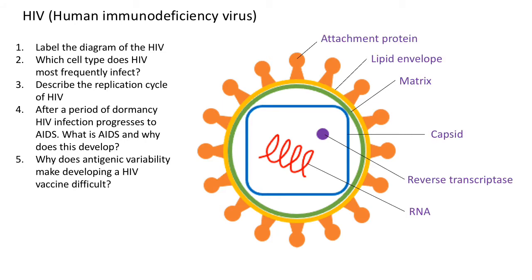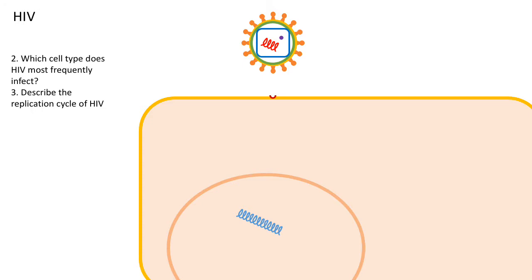Now let's look at the replication cycle, starting with question 2: which cell type does HIV most frequently infect? It infects several types of cell, but the one it most frequently infects is the helper T cell. These are also known as CD4 positive cells because they have receptors on their surface called CD4 receptors, which are important for HIV infection because they act as a binding site for the HIV virus.